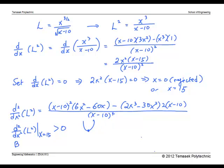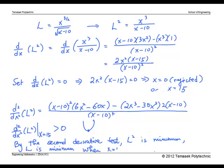By the second derivative test, L squared is minimum, or in other words, L is minimum, when x equals to 15. This minimum L is found by substituting x equals to 15 into the original L expression. This gives 15 times square root 3, or approximately 26 cm.